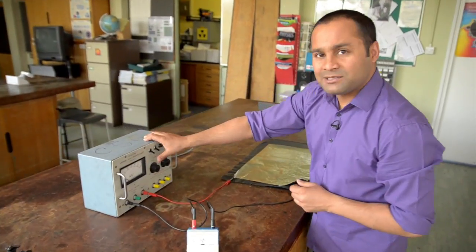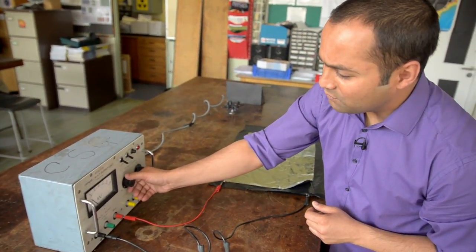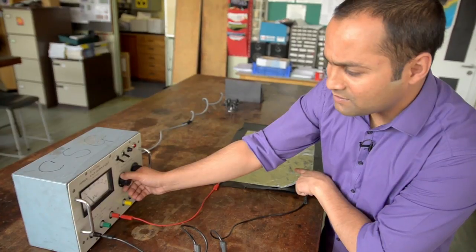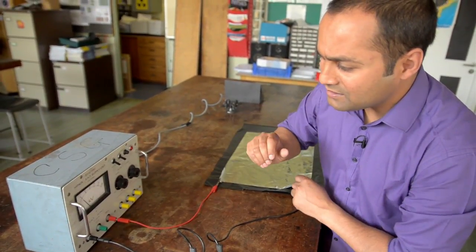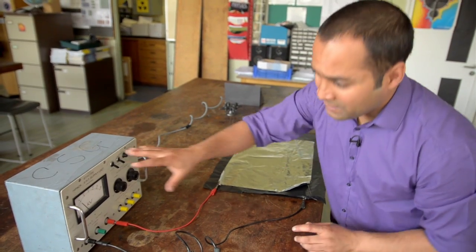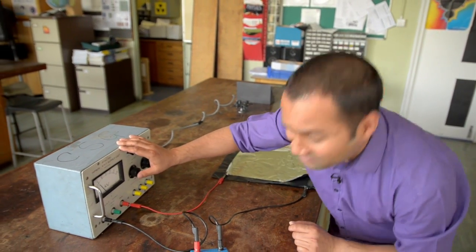turning the power supply on and gradually increasing the voltage until you hear these sparks, and then turning the voltage down until just before the sparks start. And here I'm using about 900 volts.